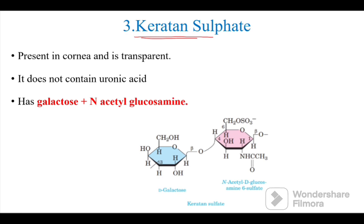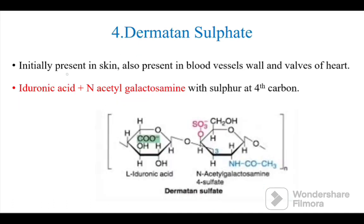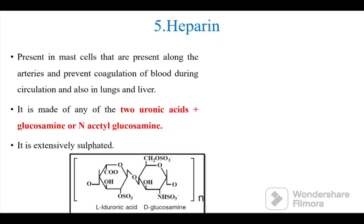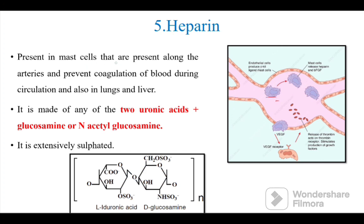Keratan sulfate is present in the cornea and is transparent. It does not contain uronic acid; instead it contains galactose and N-acetylglucosamine. Dermatan sulfate is present in skin, blood vessel walls, and heart valves. It is made of iduronic acid and N-acetylgalactosamine with a sulfate group at the fourth carbon.